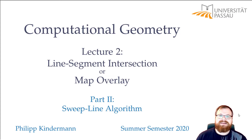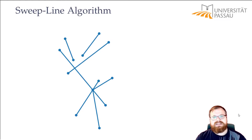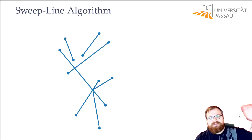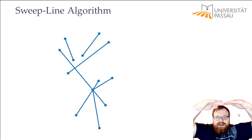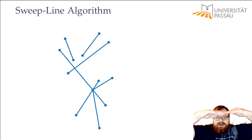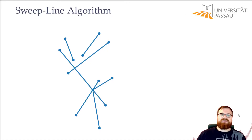We will now have a look at the sweep line algorithm. We consider the same example as before, and we want to process all the segments from top to bottom. If we take some horizontal line that moves downwards, in the very beginning, before it hits any segment, it doesn't have to do anything.